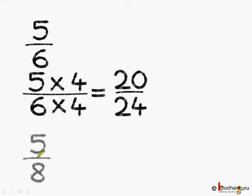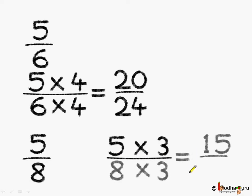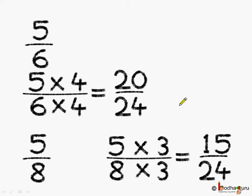Now, the next fraction is 5 by 8. We need to multiply it by 3, both the numerator and the denominator. 5 multiplied by 3 is equal to 15. 8 multiplied by 3 is equal to 24. So, we get the equivalent fractions 15 by 24 and 20 by 24.